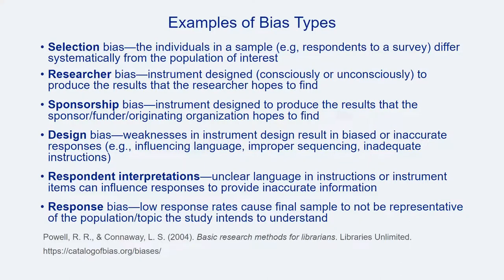Even experienced survey designers can let bias sneak into their surveys unintentionally. There are nearly countless types of bias that can impact the validity and utility of a survey. Selection bias results when the individuals responding to a survey differ from the population of intended interest — this can happen due to poor design or tendencies of some populations to respond or not respond to surveys, and when survey samples are created haphazardly this type of bias can run rampant. Researcher and sponsorship bias occur when wishful thinking, self-serving intentions, or other motivations influence the assessment design to produce desired rather than actual and true results — this can be intentional or unintentional.